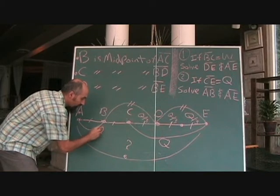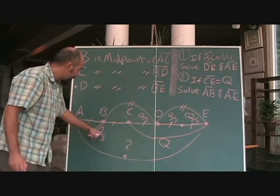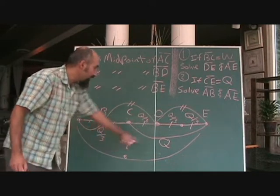So we just solved for the first part of the second question. That's Q over 3. Well, what's the length from A to E?